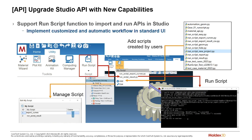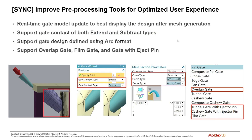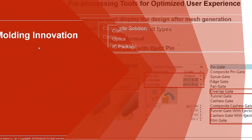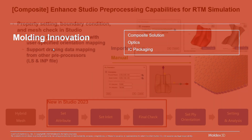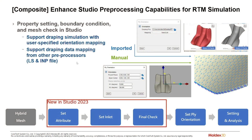The gate wizard now allows you more control over the contact with a surface. There is an overlap or missing piece to the connection, and you can now control the contact type — whether it's extended or subtracted — through the interface, and the mesher will follow that gate positioning.